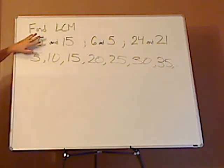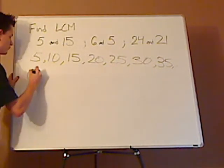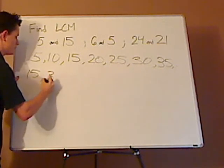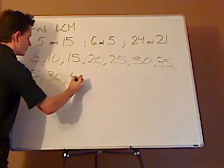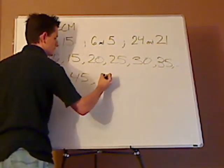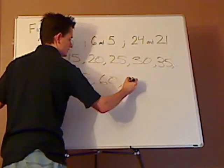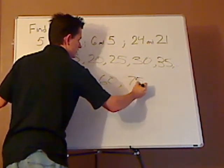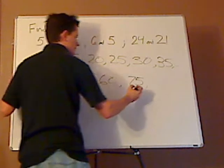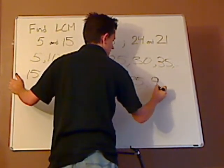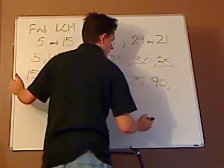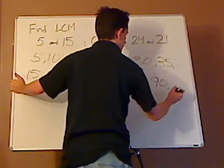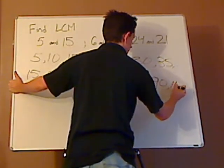Then you do the same thing with 15. 15 times 1 is 15, 15 times 2 is 30, 15 times 3 is 45, 15 times 4 is 60, 15 times 5 is 75, 15 times 6 would be 90, and then 15 times 7 would be 105.